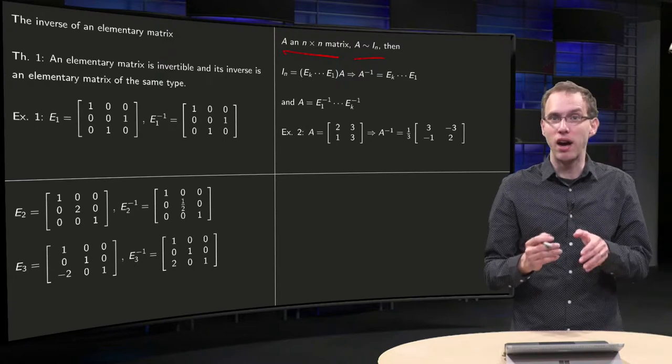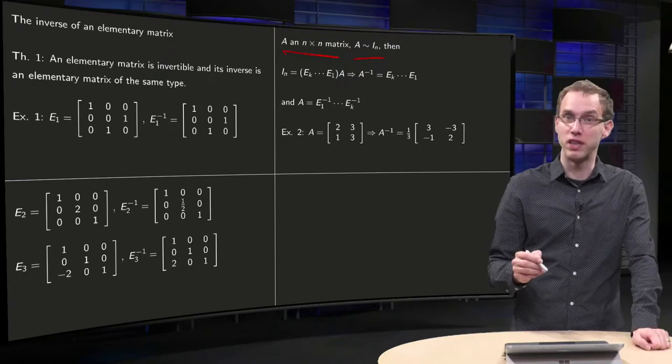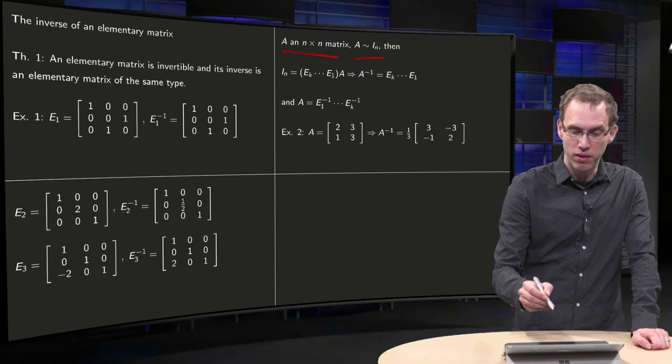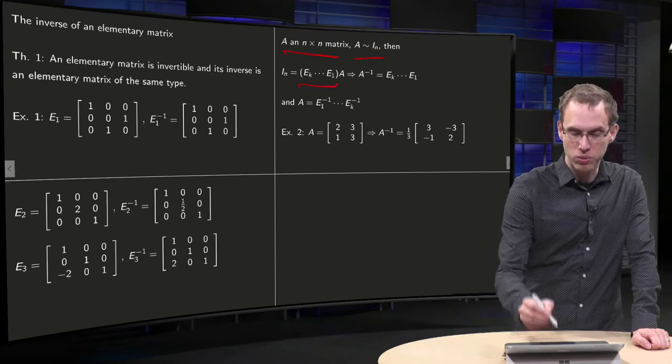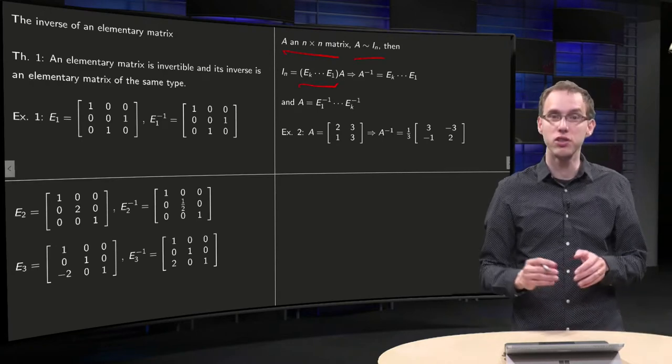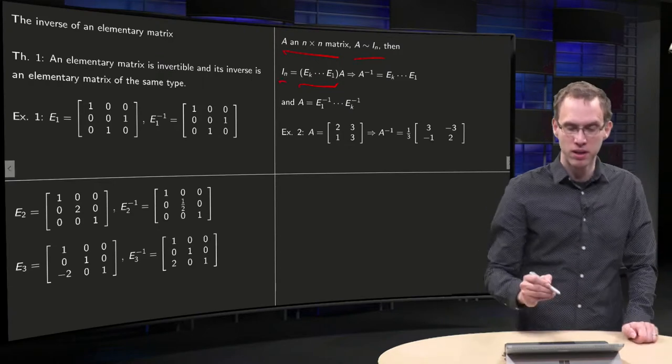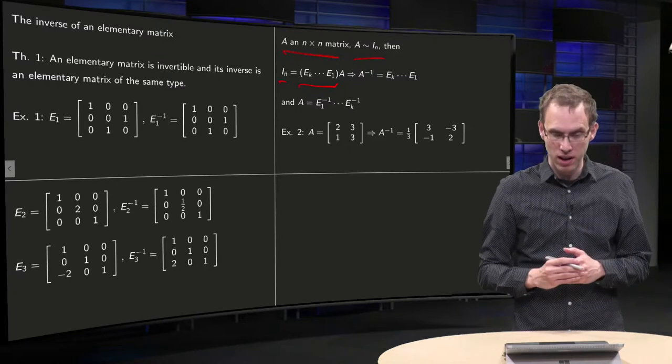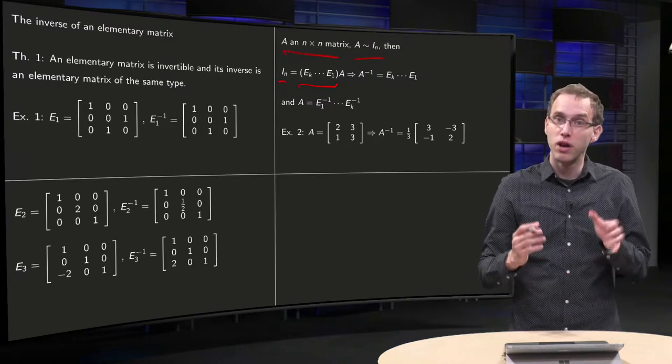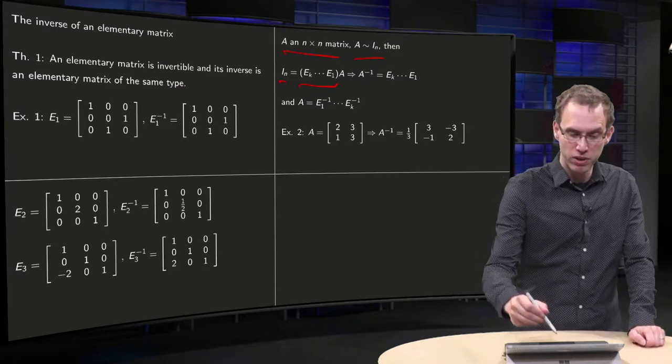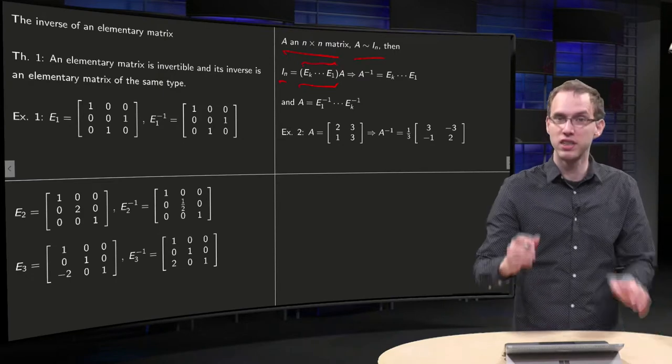Then you know you have a sequence of row operations which do the job. So you have a sequence of E1 to EK such that if you apply them to your matrix A, you get the identity matrix.